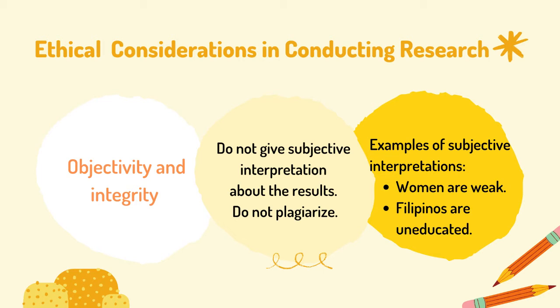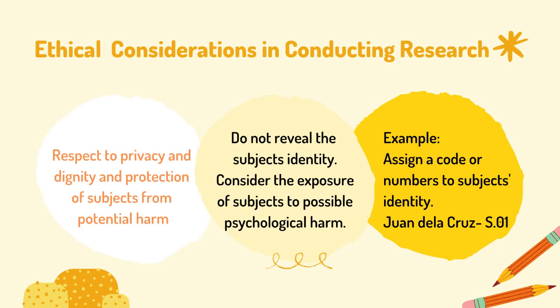Objectivity and Integrity: Do not give subjective interpretation about the results. Also, do not plagiarize. Examples of subjective interpretations are: 'Women are weak' or 'Filipinos are uneducated.' Second, respect privacy and dignity, and protection of subjects from potential harm. Do not reveal the subject's identity. Consider the exposure of subjects to possible psychological harm. For example, you may assign a code or numbers to a subject's identity, such as S01, which stands for subject number one.